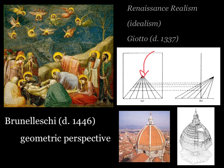He further recognized that there are also vanishing points on the edges of eyesight — on the peripheral vision. So he was able to draw grids on the periphery as well, which helped him to very realistically portray the landscapes he was trying to imitate.